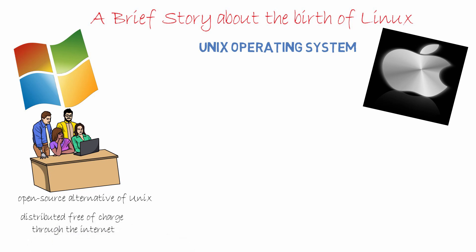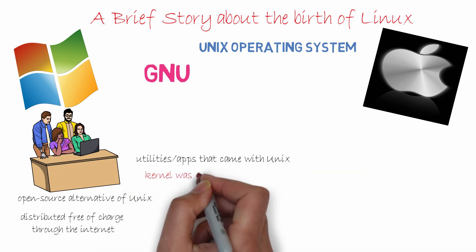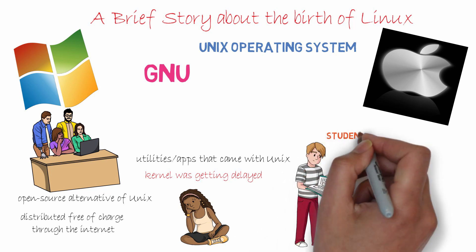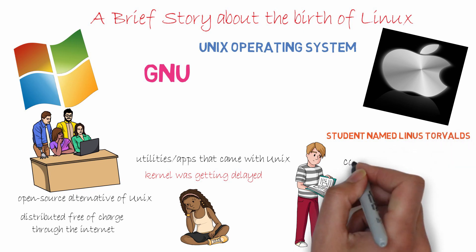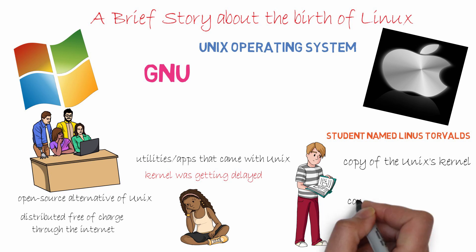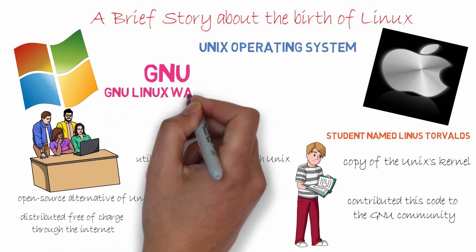The name of their organization is GNU, which stands for GNU is Not Unix — where G is for GNU, N is for Not, and U is for Unix. They were successful in making all the utilities and apps that came with Unix, but the kernel was getting delayed. Fortunately, at another corner of the planet, a college student named Linus Torvalds was working on making a copy of the Unix kernel and was successful in doing so. Linus Torvalds contributed his code to the GNU community and an operating system named GNU Linux was born.